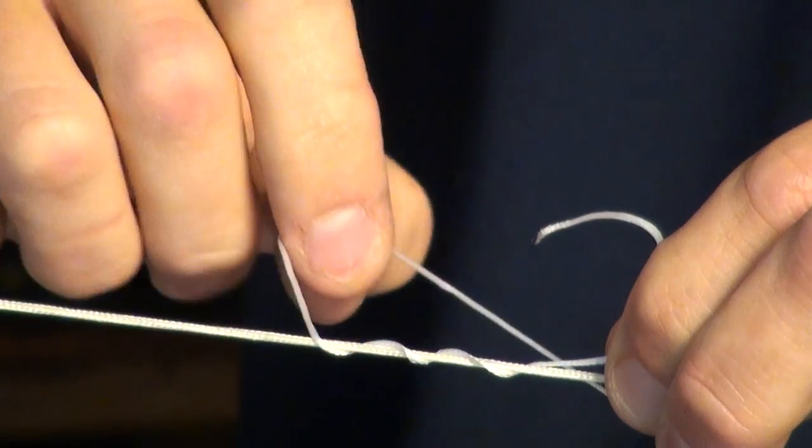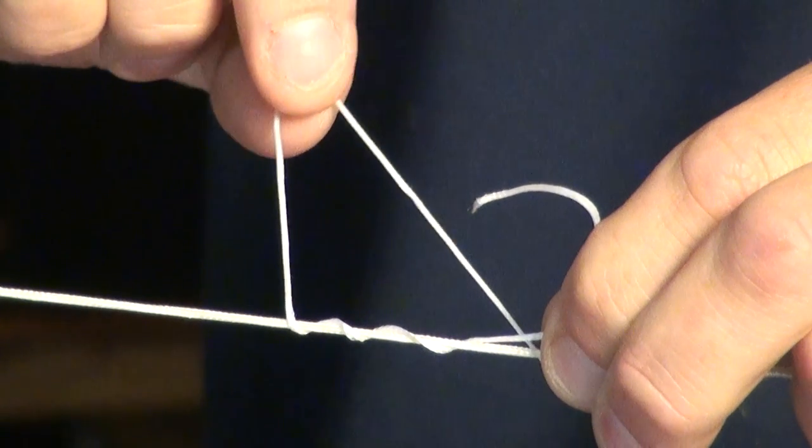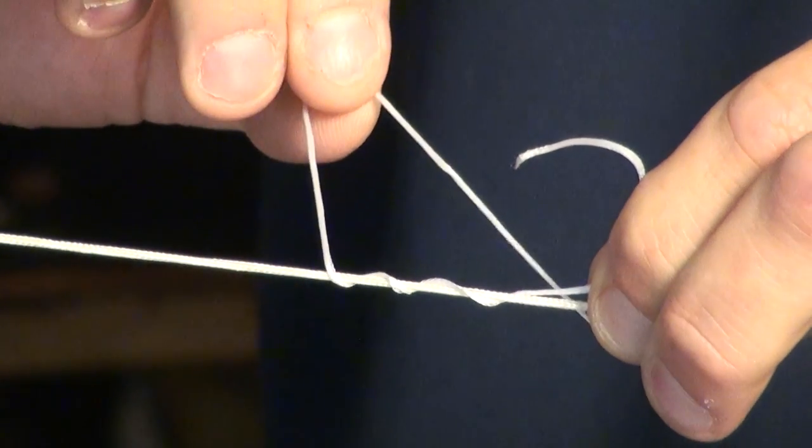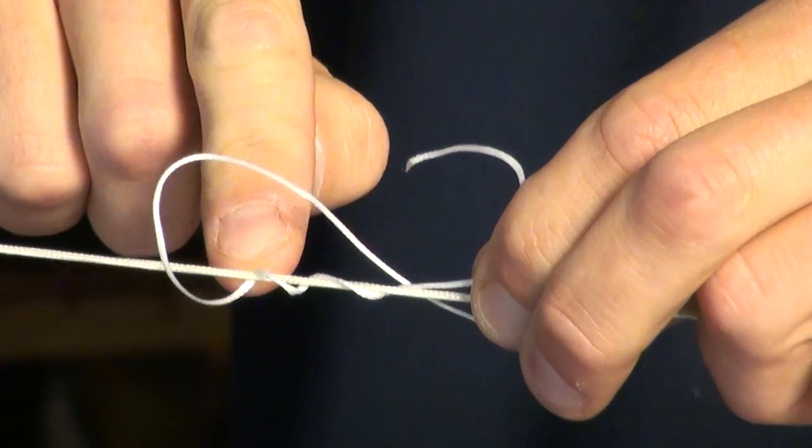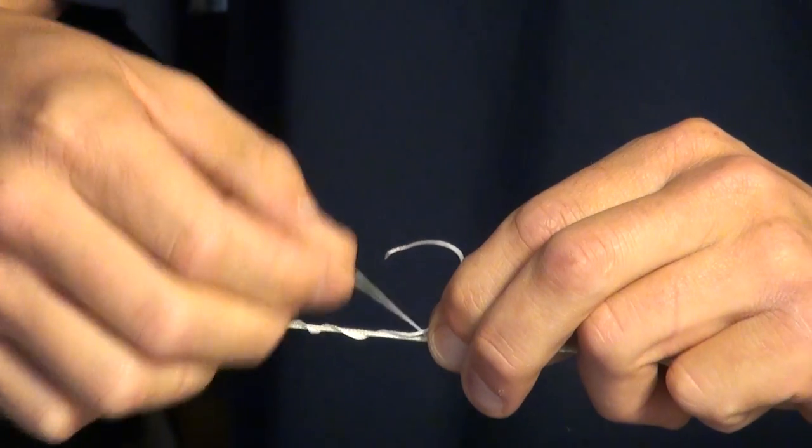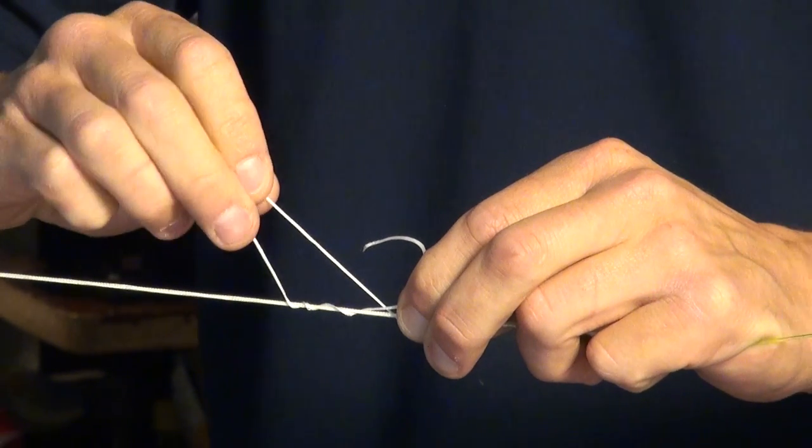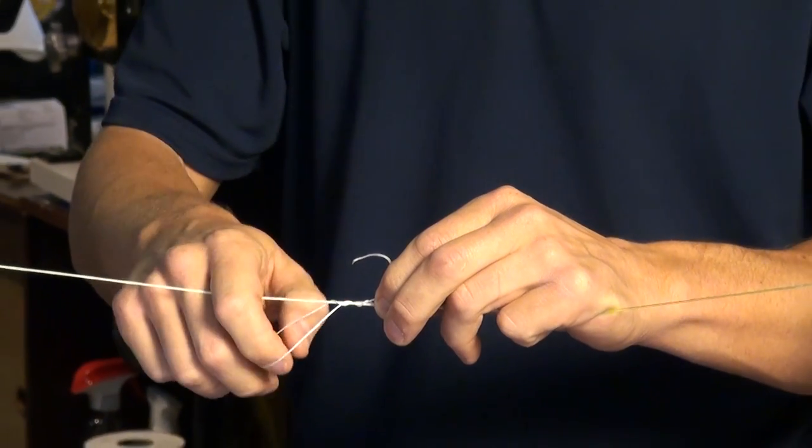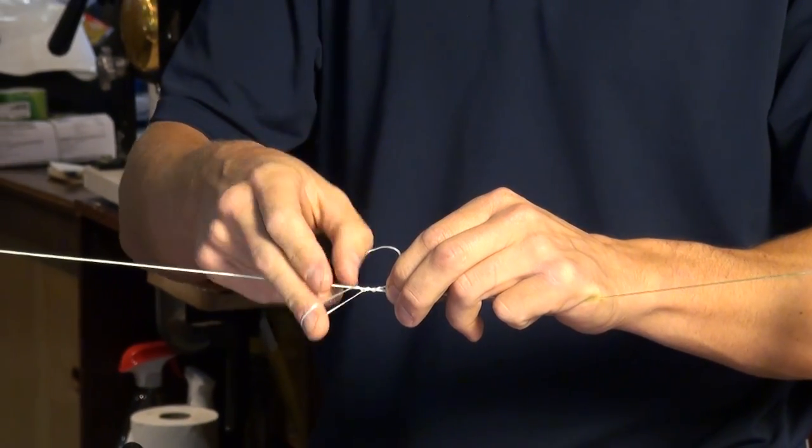Then I take that knot, grab it by the loop, and actually unwrap the twist. So you'll see the twist here. We're going to unwrap it. So when we unwrap it from this side, this end of the loop will actually re-wrap around the line. You'll see that as I begin. One, two, and three.